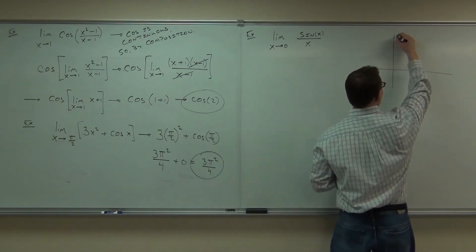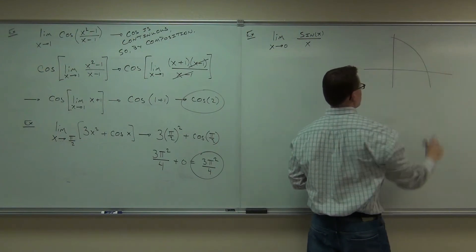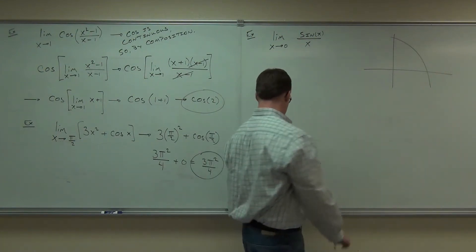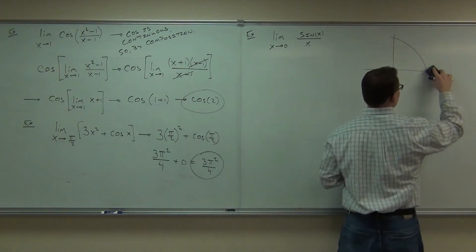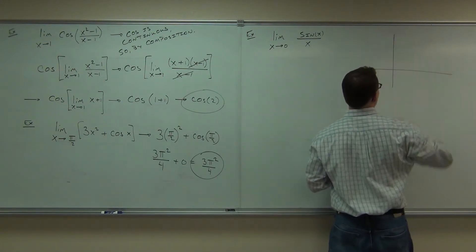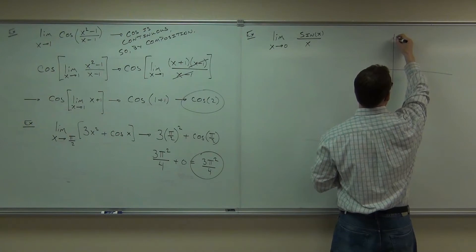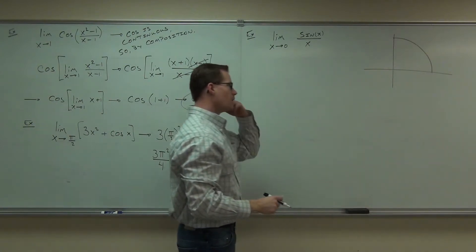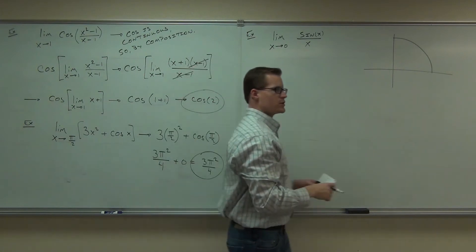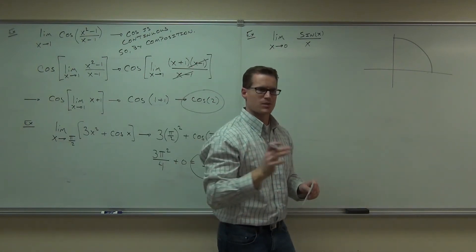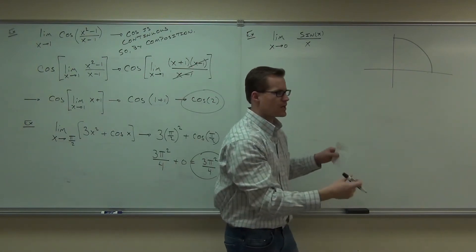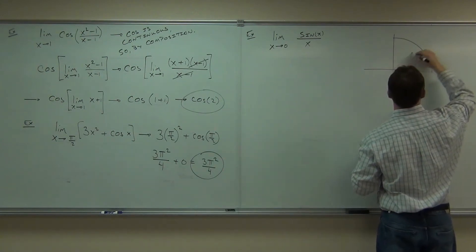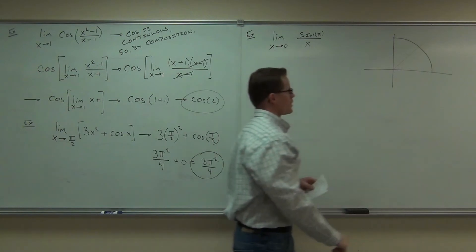What I'm going to do is take part of my unit circle. I'm going to take an arbitrary angle. I can't be specific because, of course, we want this to work all the time. So I'm going to draw that.